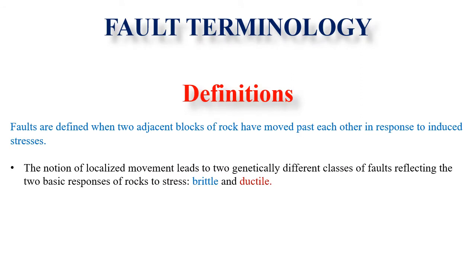Now we will learn the terminologies related to faults. Faults are defined as structures where two adjacent blocks of rock have moved past each other in response to induced stresses. The notion of localized movement leads to two genetically different classes of faults reflecting the two basic responses of rock to stress: brittle and ductile.